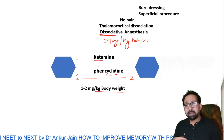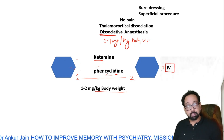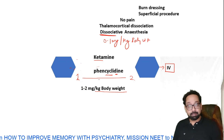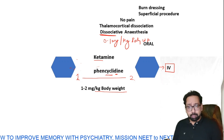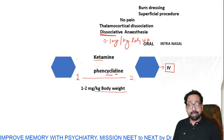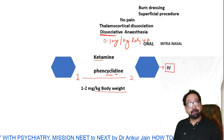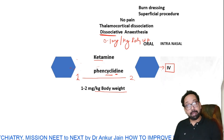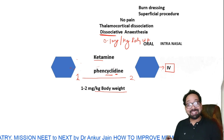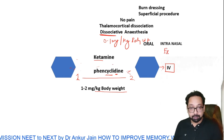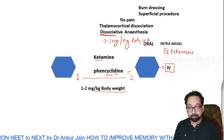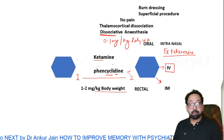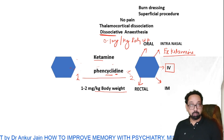Ketamine can be given by multiple routes: IV, oral, intranasal spray, intramuscular, and rectal. IV route is used in psychiatry — in suicidal patients, a trial found it decreases suicidal tendency. It is FDA approved as an intranasal spray for resistant depression, where it was found effective beyond normal antidepressants. The specific form approved is S-ketamine, the S-enantiomer of ketamine.